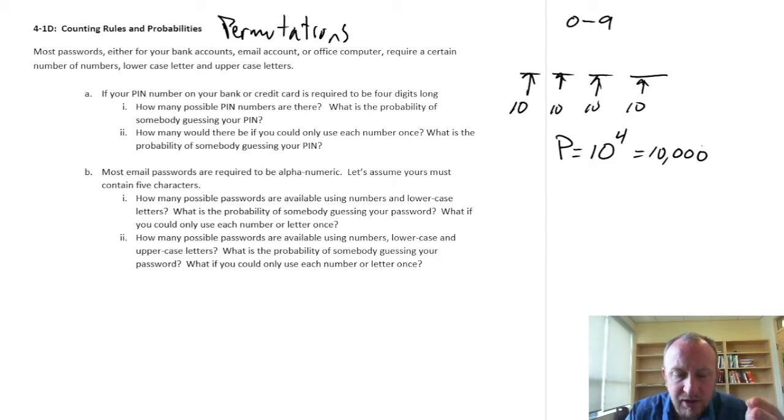So what is the probability of somebody guessing my pin? Well, there's going to be one in ten thousand. Pretty small probability, so 0.0001. So, pretty slim chance that somebody is just going to randomly guess my pin number.